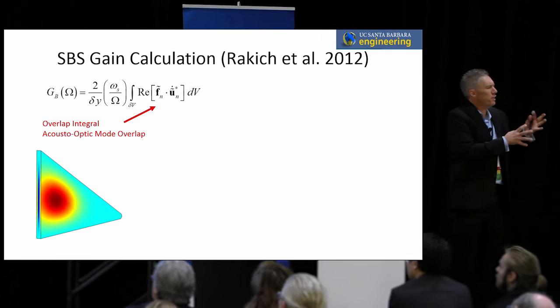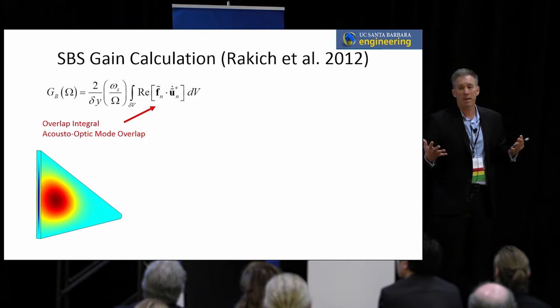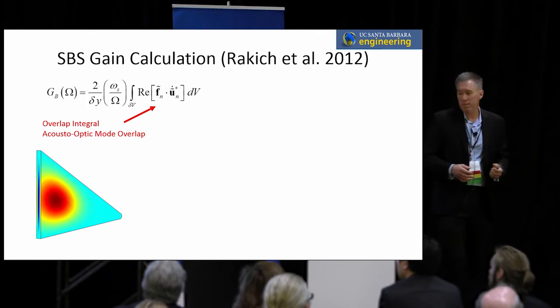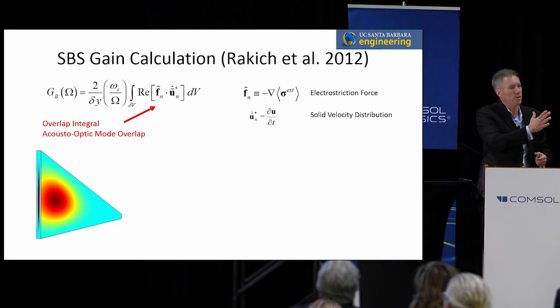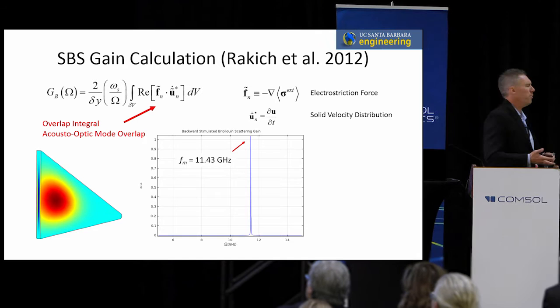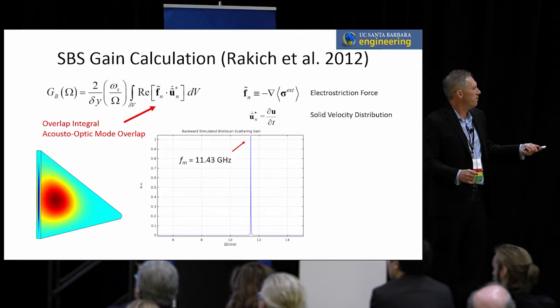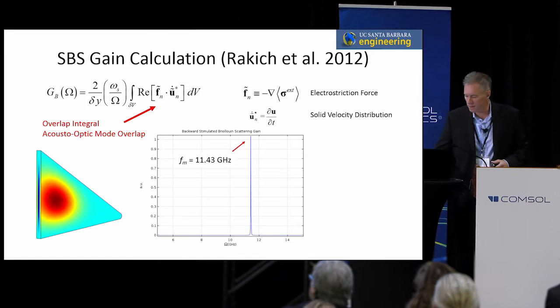We calculate the mode overlap integral. In order for the acoustics to stick around, it needs an acoustical mode and a photon mode that overlap. Reiki came up with this integral a few years ago. You can calculate the electrostriction force and the velocity distribution, look at the mode overlap, then sweep omega and find out at what frequencies the acoustics would actually live. If you're off a little on the acoustic frequency, there is no mode overlap. But when you carry through this integration and sweep this space, you find very fine lines of gain, and they're very strong — orders of magnitude.